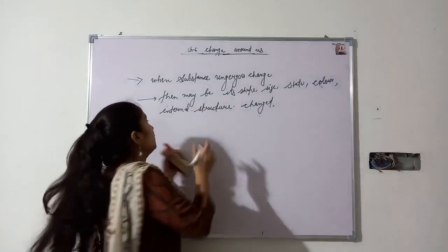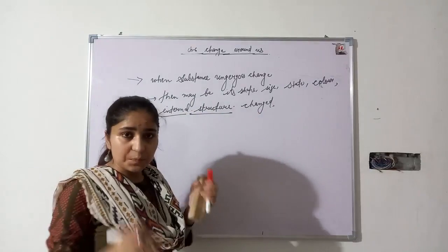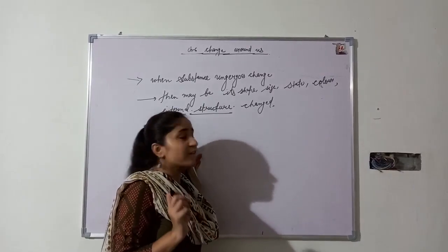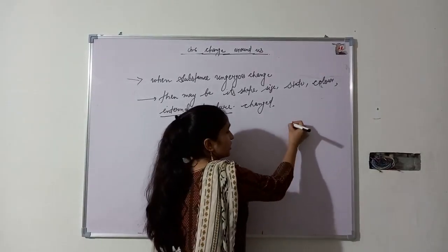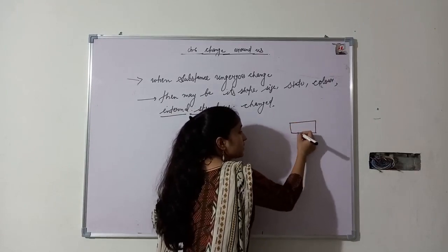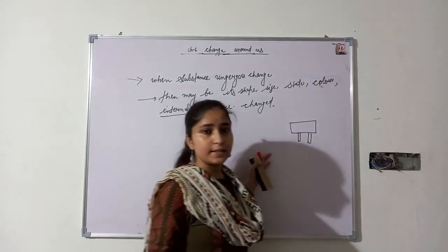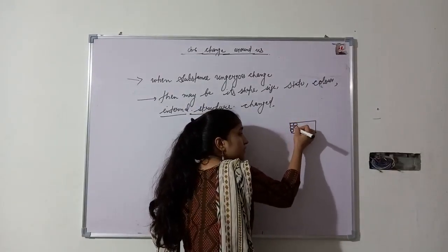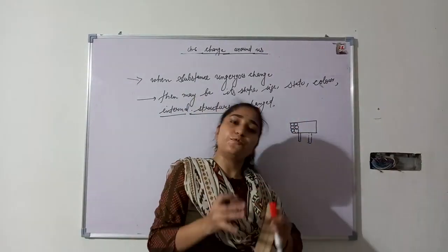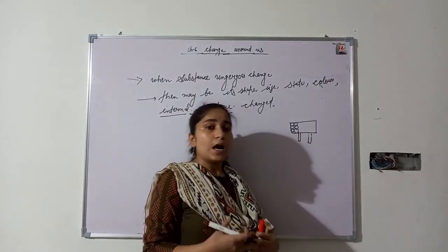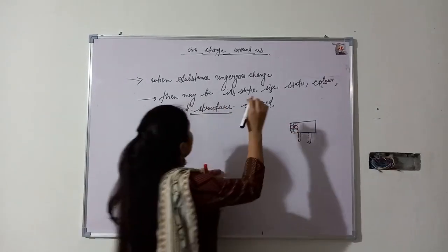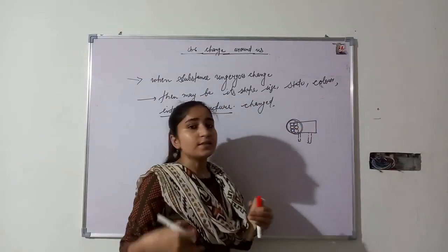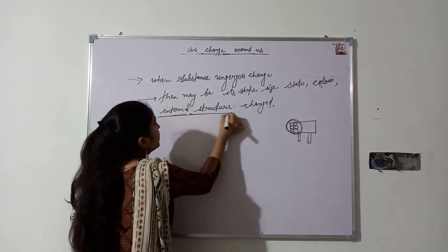Internal structure means the substance's internal structure. As you may have studied in a previous chapter, any substance or thing is made up of atoms. These atoms are arranged in a specific pattern to form substances. When a substance undergoes change, then maybe its arrangement of atoms gets changed. So this is what we mean by internal structure.